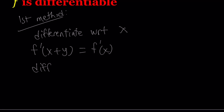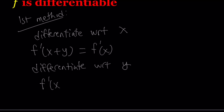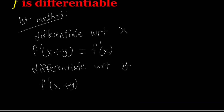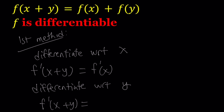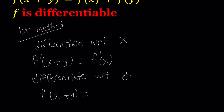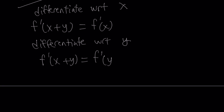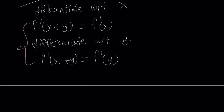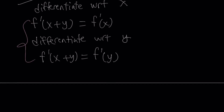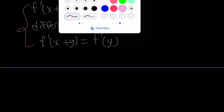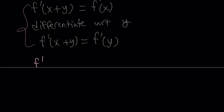Now let's differentiate with respect to y. Since we have a really nice symmetry here, we're going to get something similar. That's going to be f prime of x plus y on the left-hand side — it's not going to change. And the right-hand side, since we're differentiating with respect to y and x is a constant, we're going to get f prime of y. Notice that we've got two equations, and the left-hand sides are equal, so the right-hand sides are also equal. We get f prime of x equals f prime of y.